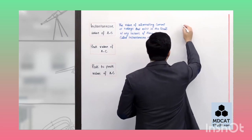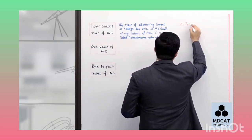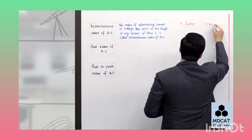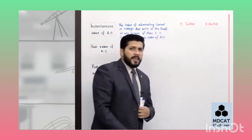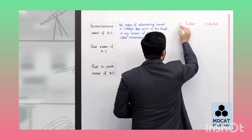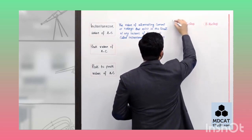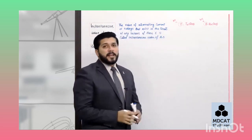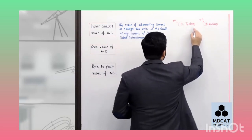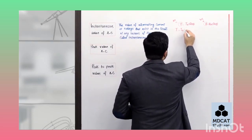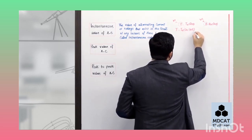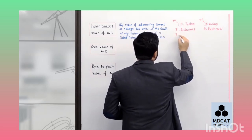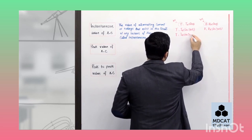Instantaneous value کتنی ہوگی کسی بھی لمحے، اس کے لیے equation ہے: current کے لیے i = i₀ sinθ اور voltage کے لیے v = v₀ sinθ۔ یہ sin curve ہے اس لیے sin theta آیا ہے - یہ چیزیں last time discuss کی تھیں۔ یہاں i یا v instantaneous value of current اور instantaneous value of voltage ہے۔